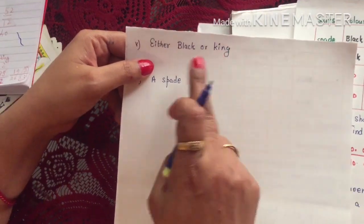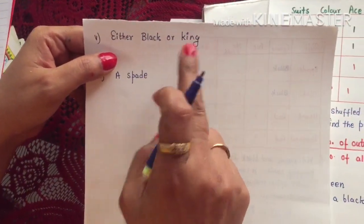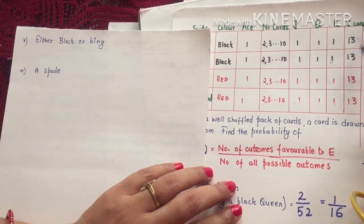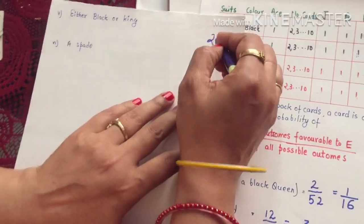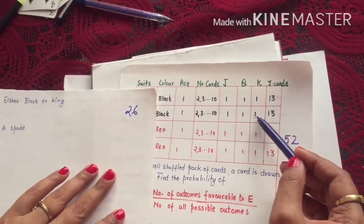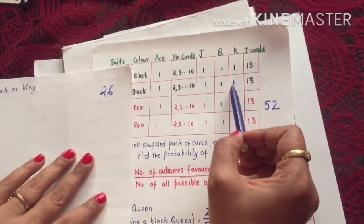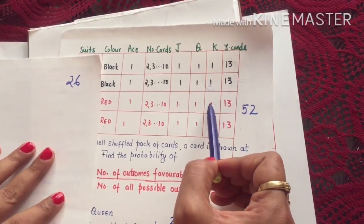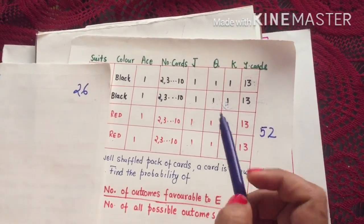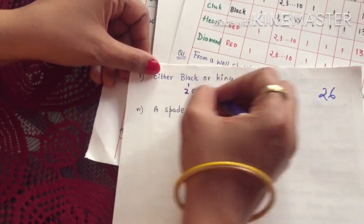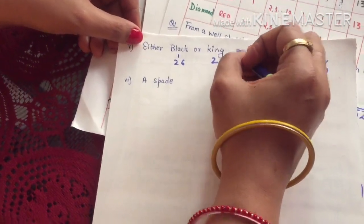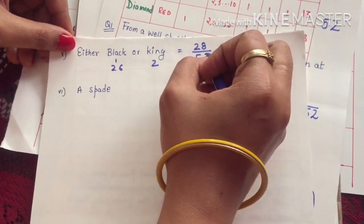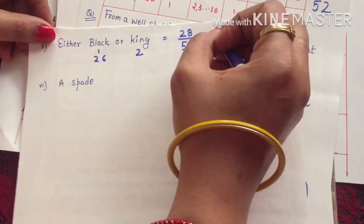Now: probability of getting either a black card or a king. Black cards total 26. Kings total 4, but two of those kings are already counted in the 26 black cards. So we add the remaining 2 red kings: 26 + 2 = 28. Favorable outcomes are 28 out of 52, which gives 7/13.